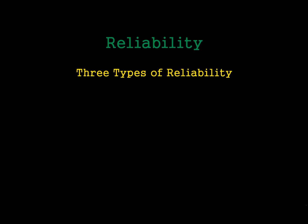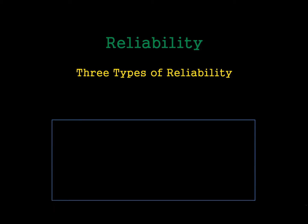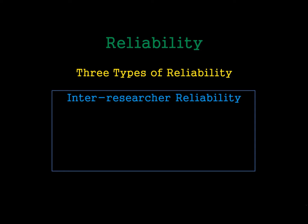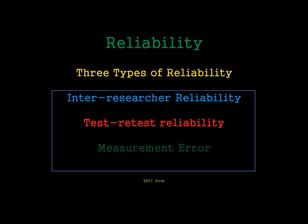There are three main types of reliability. We have inter-researcher reliability, test-retest reliability, and measurement error. Those are the three things we are going to discuss today.